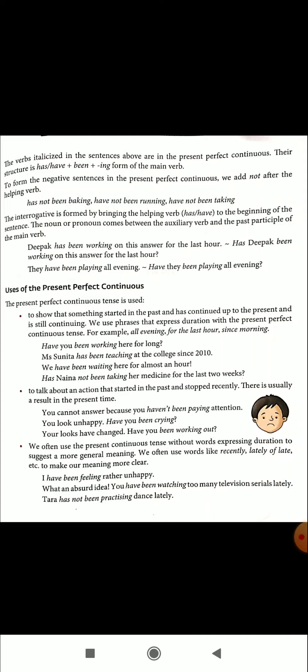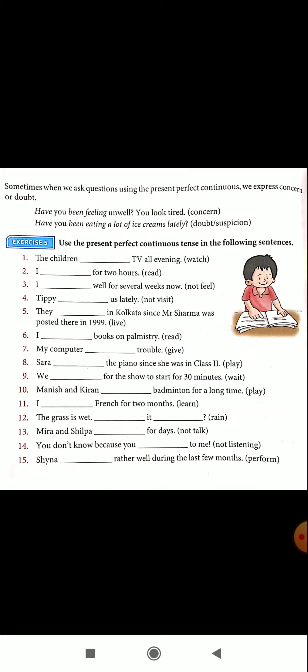We often use the Present Perfect Continuous Tense without words expressing duration, to suggest a more general meaning. We use words like 'recently,' 'lately,' or 'of late' to make our meaning more clear. For example: 'I have been feeling rather unhappy.' 'You have been watching too many television series lately.' 'Tara has been practicing dance lately.'